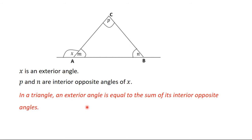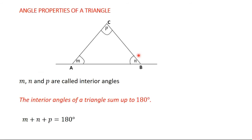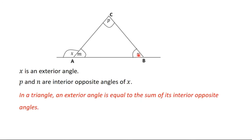So, in a triangle, an exterior angle is equal to the sum of its interior opposite angles. The exterior angle X is equal to the sum of P and N. We've now learned two properties: the interior angles of a triangle sum to 180 degrees, and an exterior angle equals the sum of its interior opposite angles.